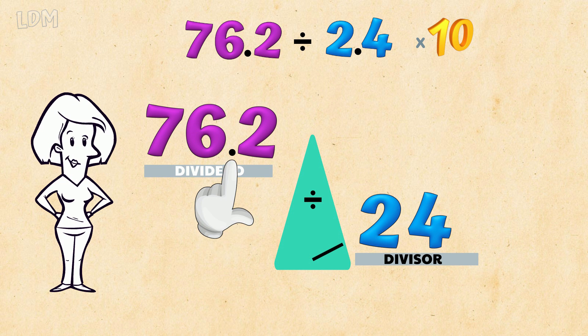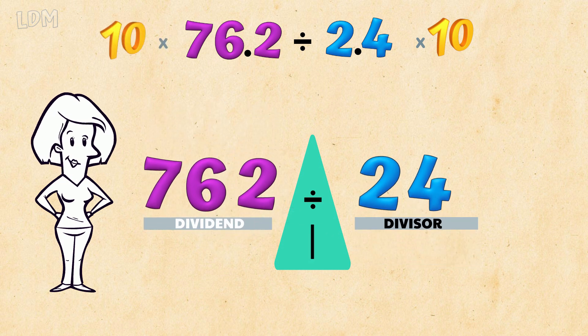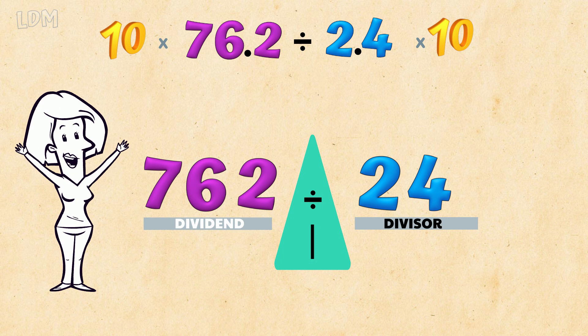When you scale up the entire problem, it keeps the relationship between the numbers the same. And that's how we get it right!